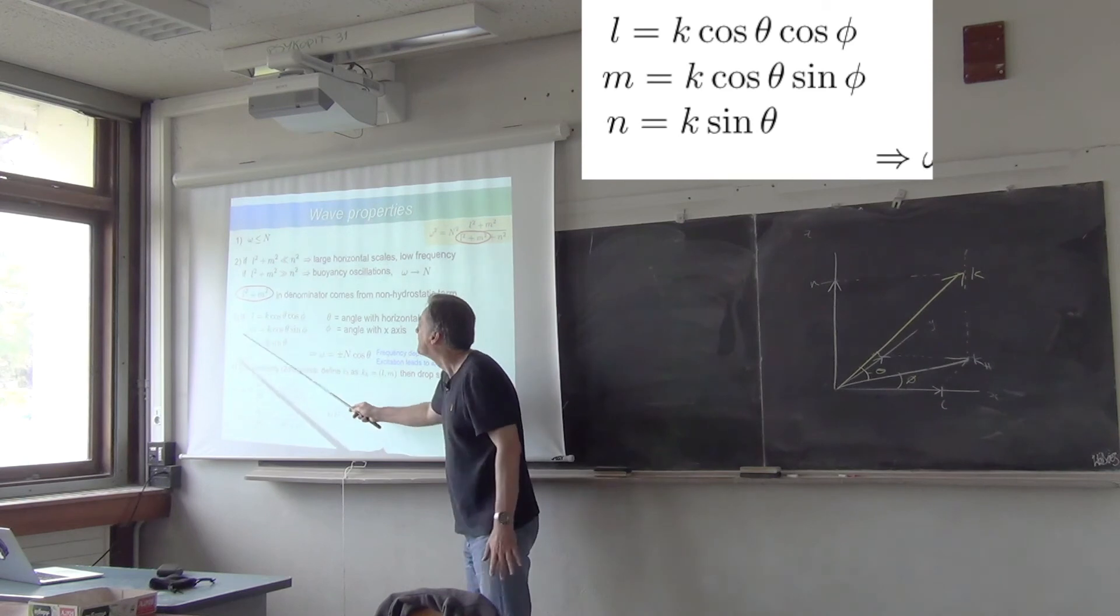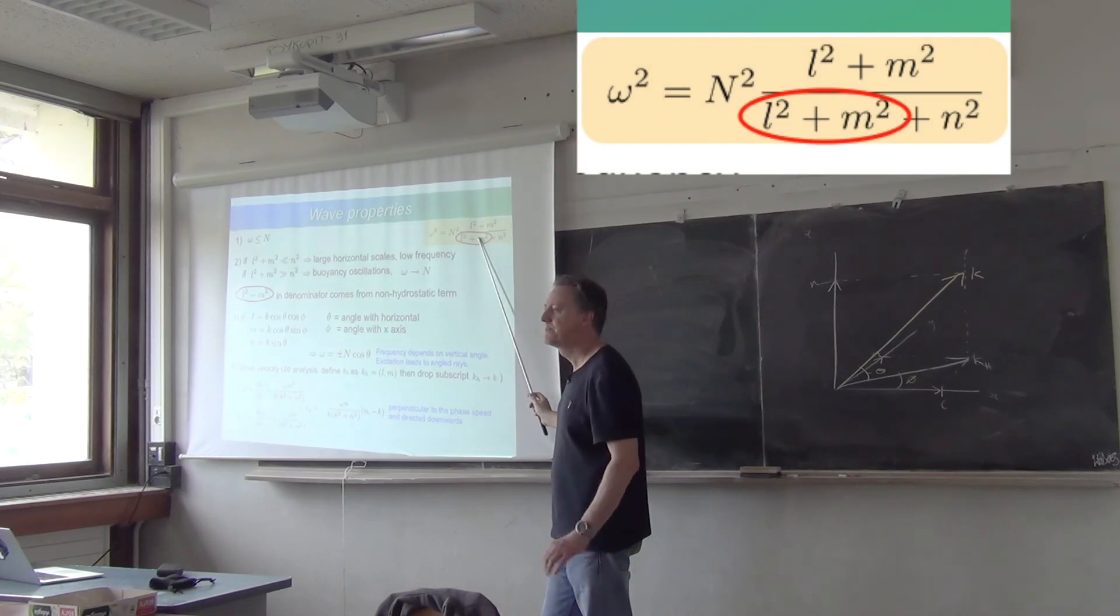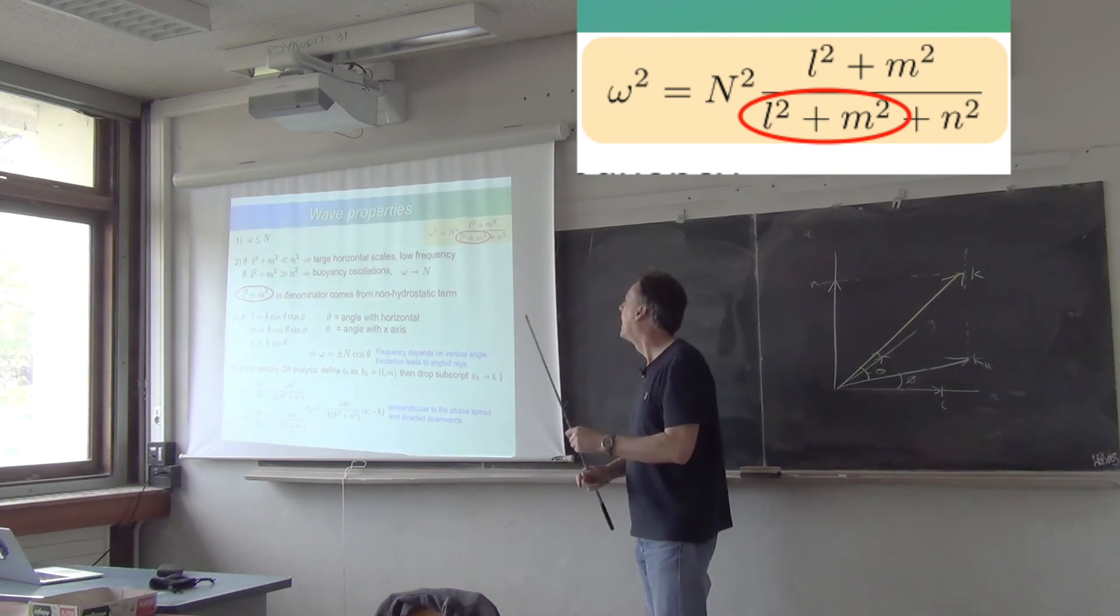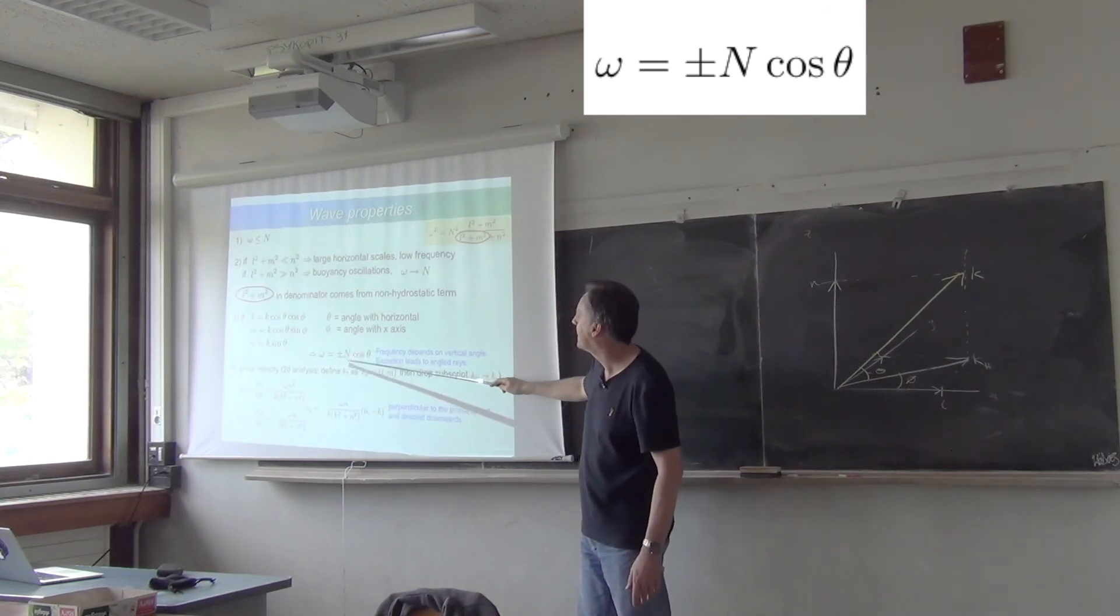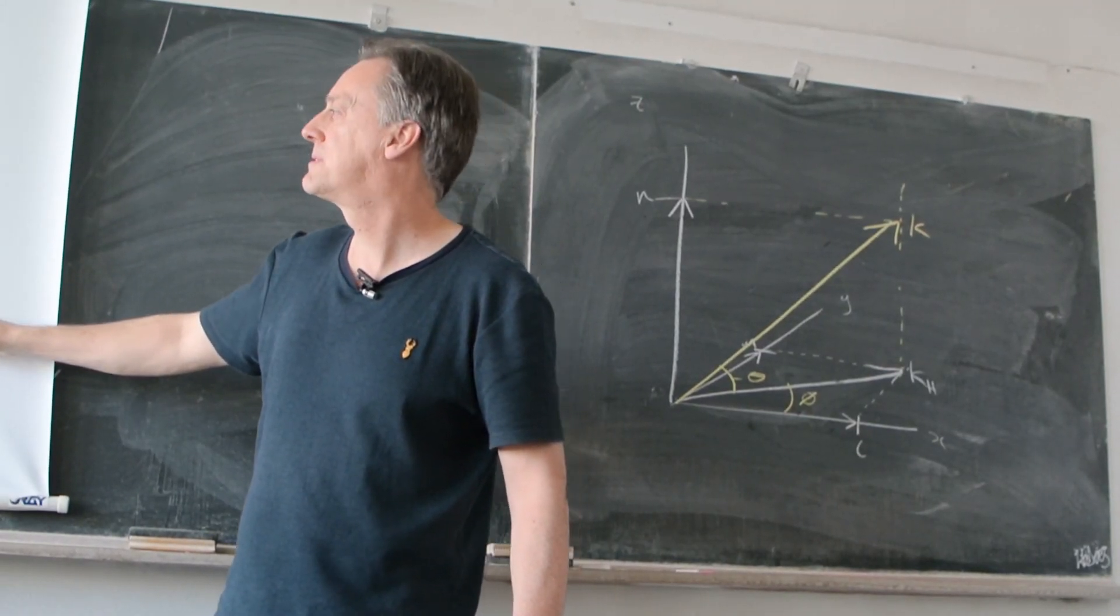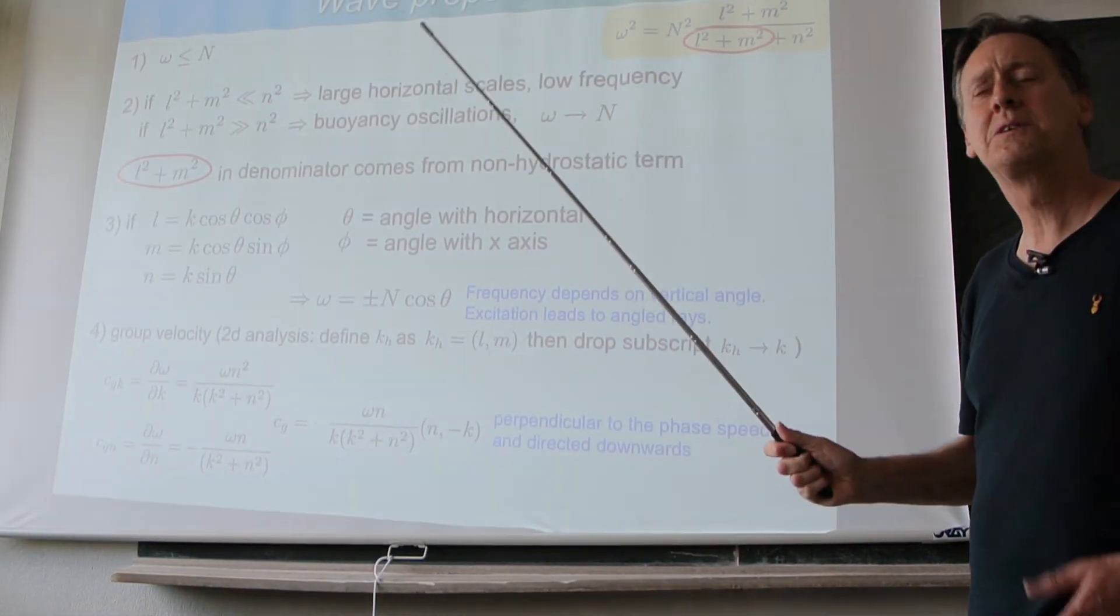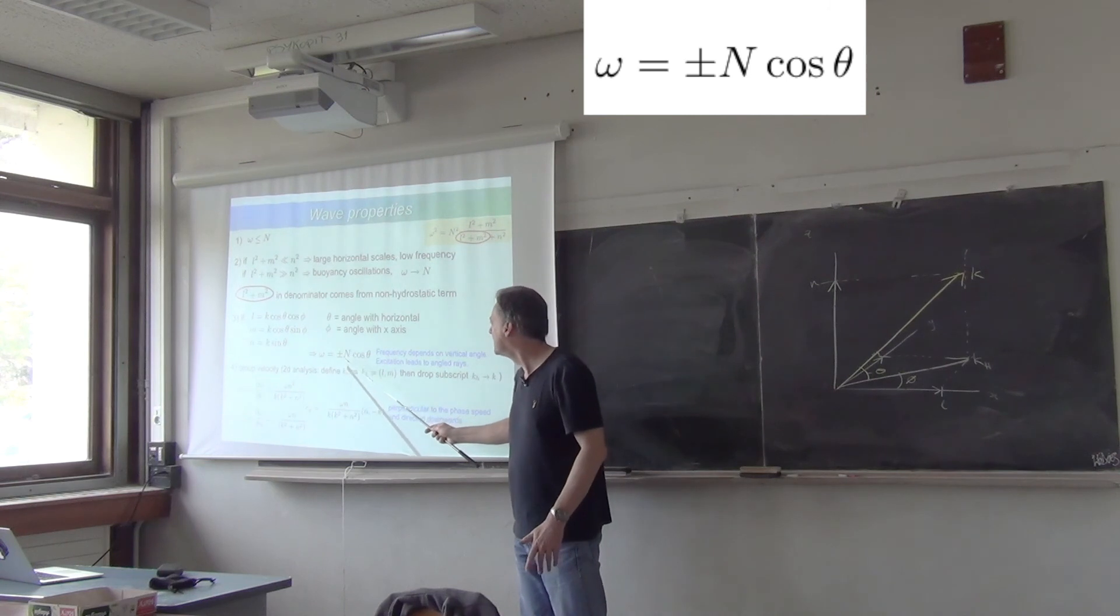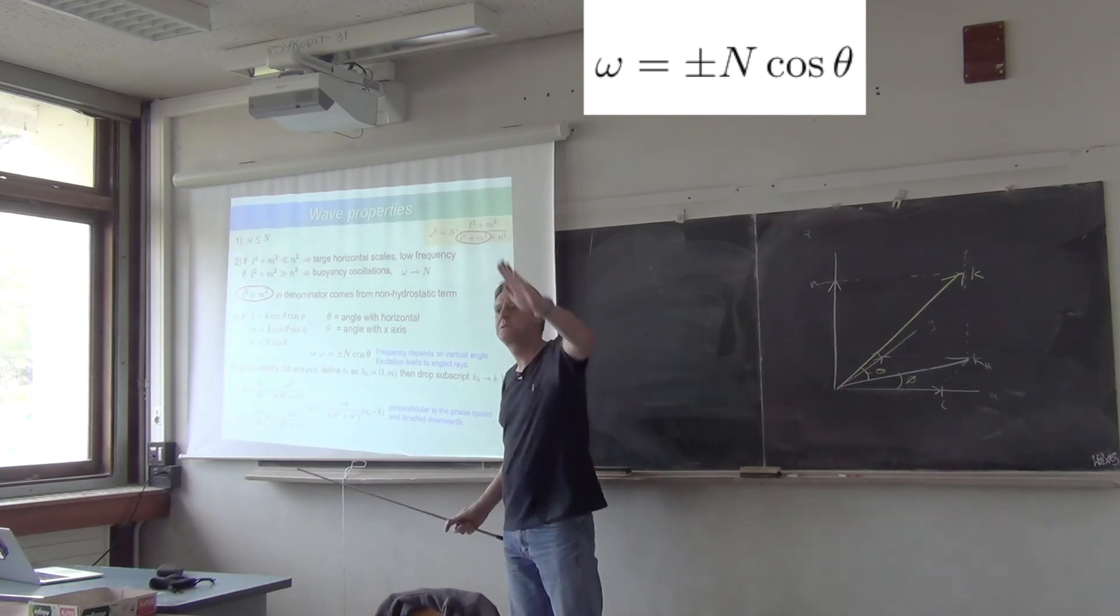If you take all that and you substitute it into the dispersion relation and fiddle around a bit, you'll get a lot of sin squared plus cos squared equals one, a lot of things dropping out, and in the end, you'll get a dispersion relation, very simple, that ω is equal to plus or minus n cos θ. Now, that's remarkable. It's a very exotic and simple dispersion relation with a really strange result. The result, think about it. What does this mean? It means that if you know the stratification and you know the frequency of the wave, then you know what angle it makes with the horizontal.